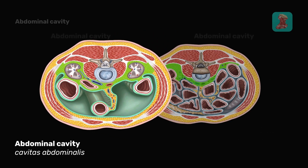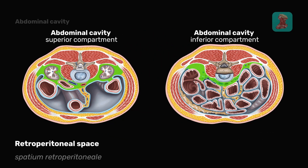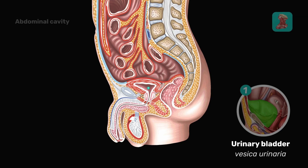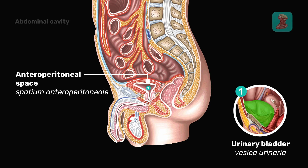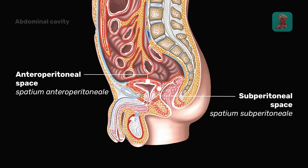The space located behind the peritoneum is called the retroperitoneal space. The space located in the area of the urinary bladder is called the anteroperitoneal space. The space located below the peritoneum is called the subperitoneal space.